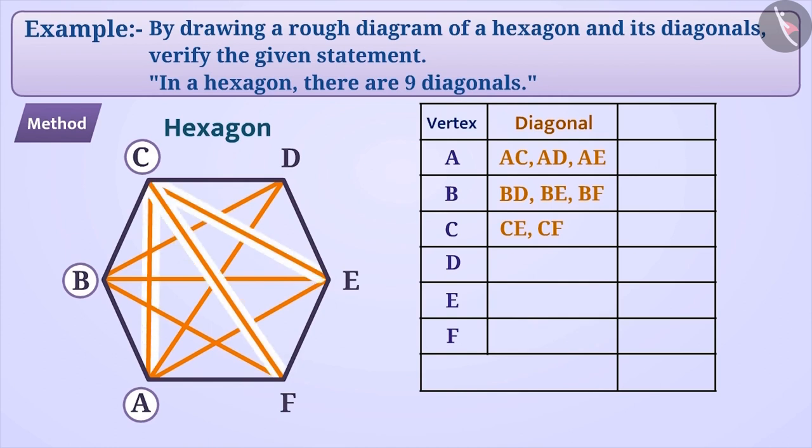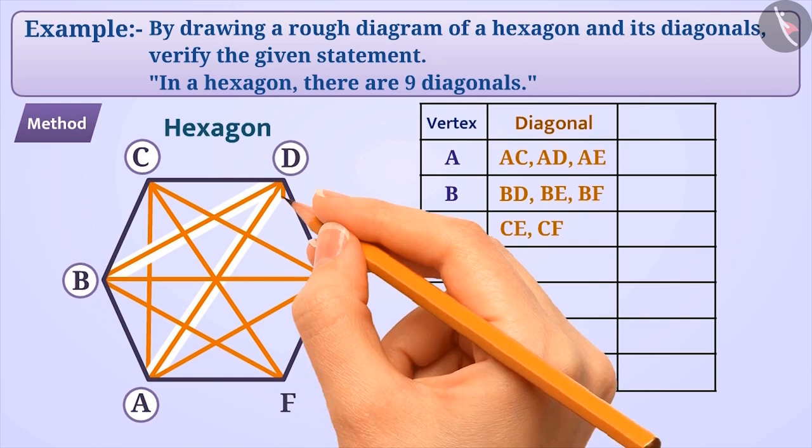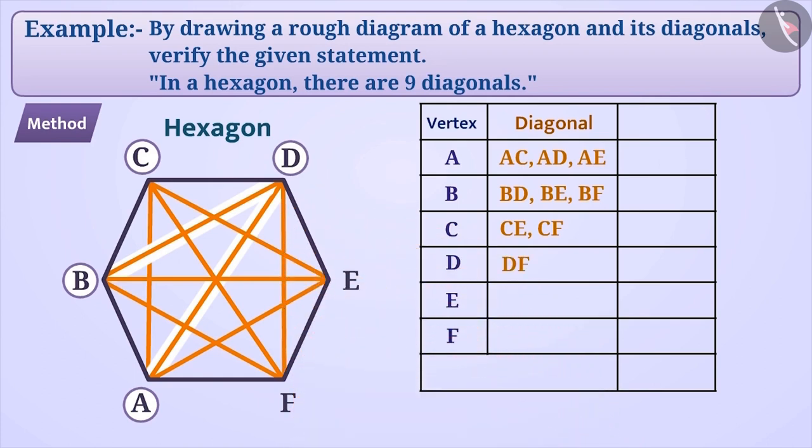Now, we see that 2 diagonals have already been formed from D. So, we will draw the remaining 3rd diagonal by joining D and F. Now, we see that 3 diagonals have already been formed from E. So, we cannot draw any more diagonals from E. Similarly, from the vertex F, we have also drawn all the 3 diagonals. So, we cannot draw any more diagonals from F.